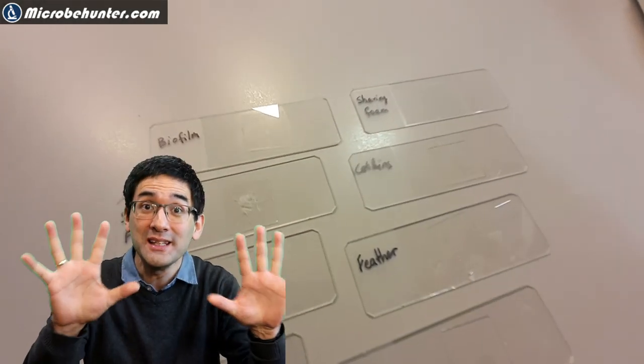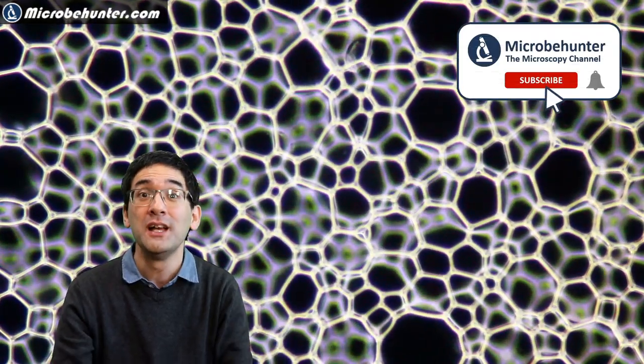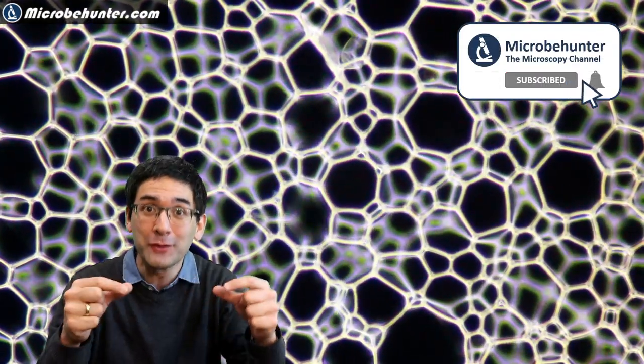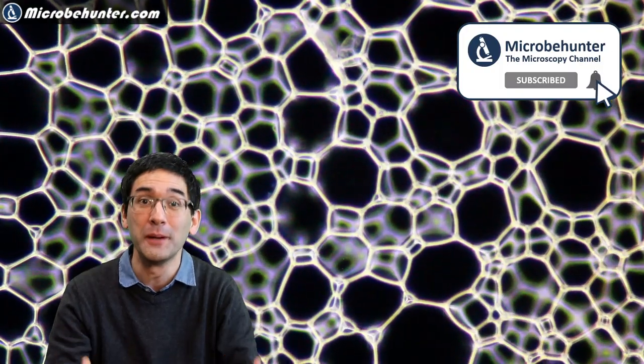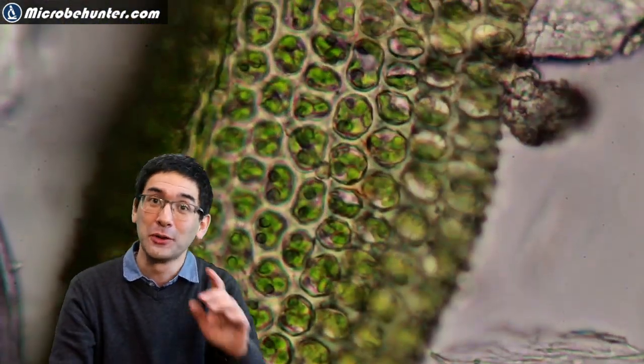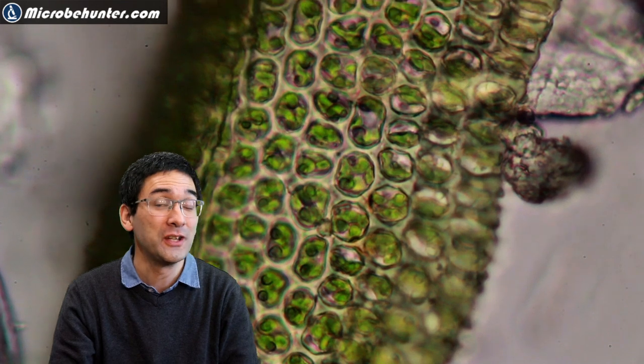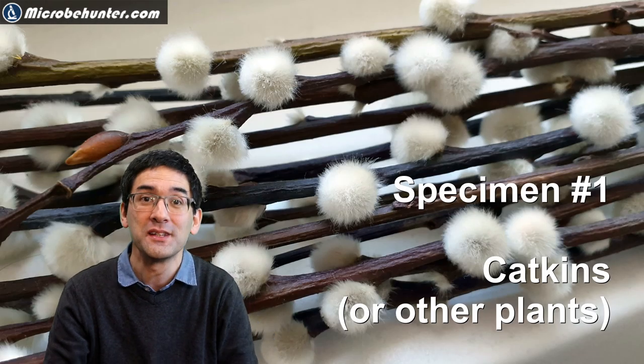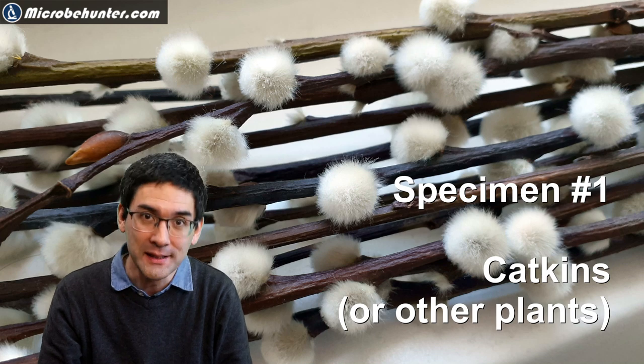So what I'm going to do is show you 10 specimens, 10 things you can find in your apartment or house that you can prepare and put on a microscope slide to observe under your microscope. We're going to get started right now. The first thing I recommend is walk around and look for plants.